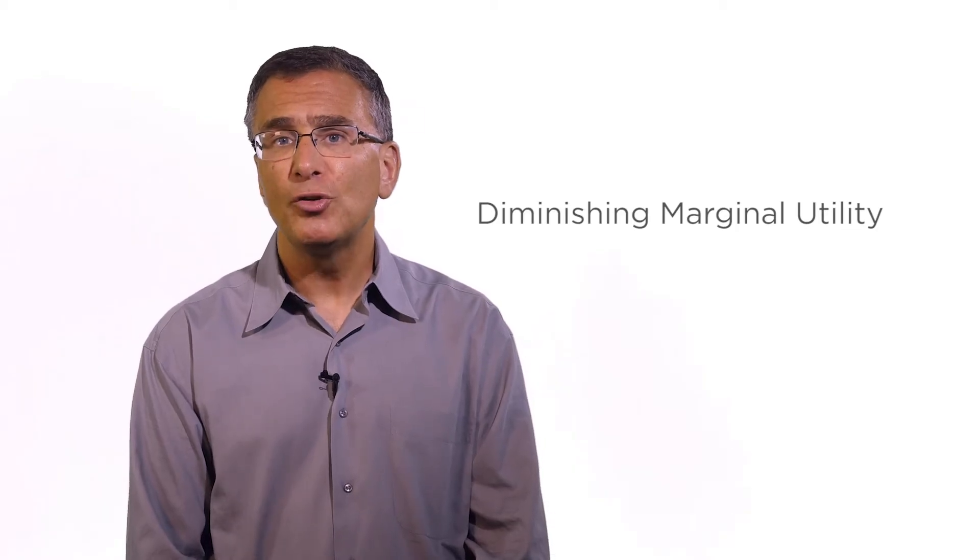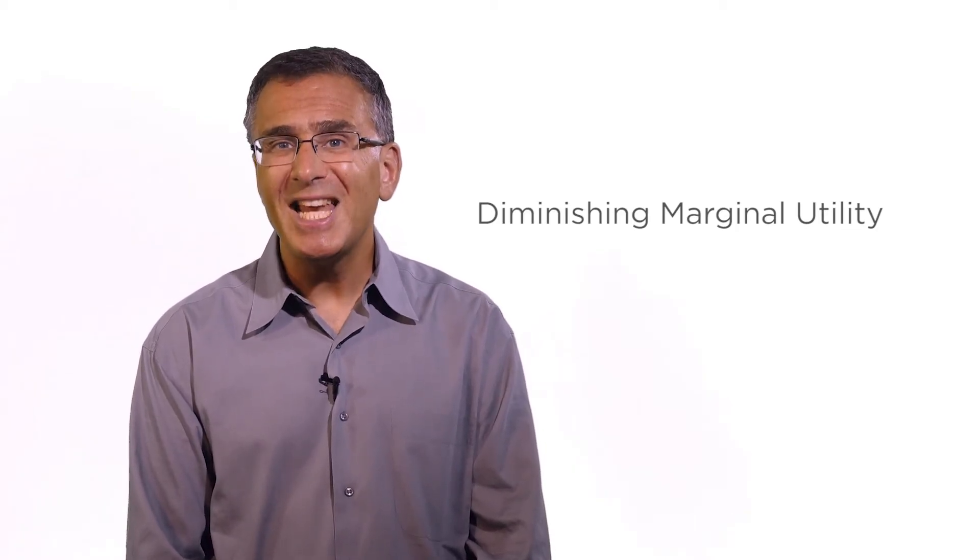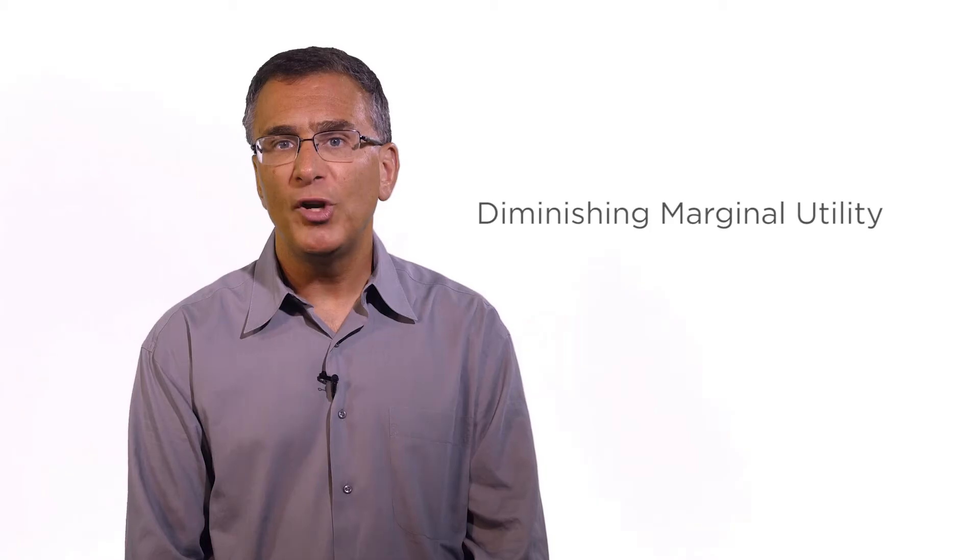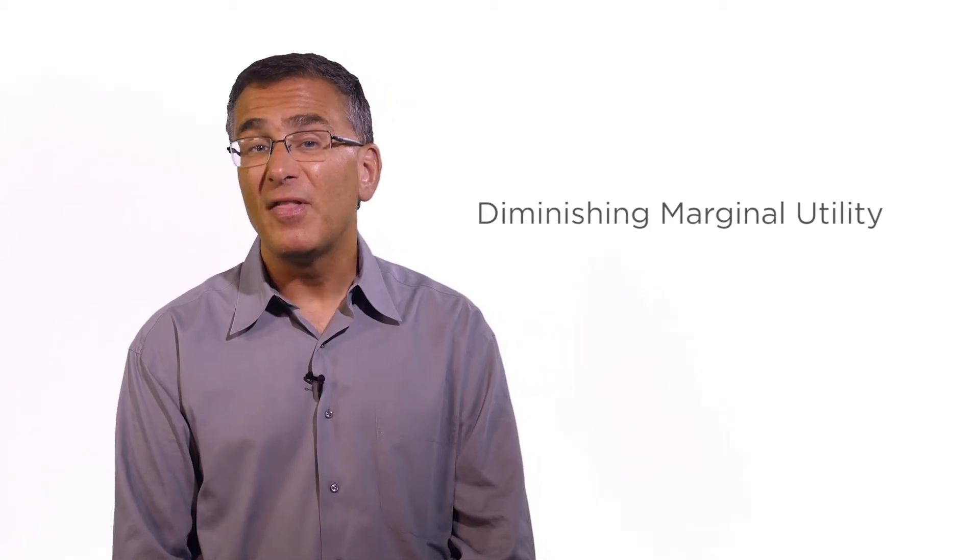Diminishing marginal utility means that each extra unit of a good increases utility by less than the previous unit of the good. And this makes sense. If you're hungry, the first slice of pizza makes you very happy. The second slice makes you happy but not quite so much. And the third slice even less so and so on. The same is true for cookies. The first one makes you happy, the second one less so. It's the same with pretty much every type of good.